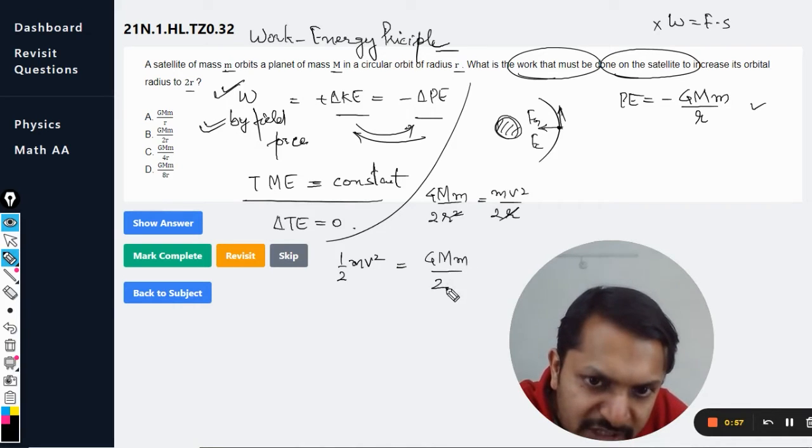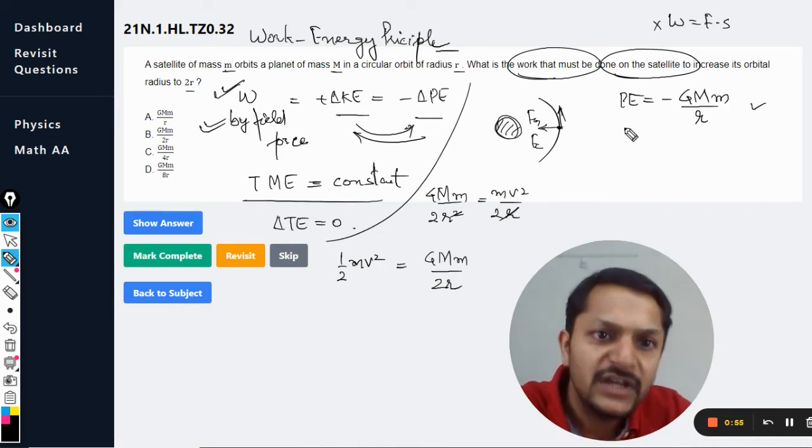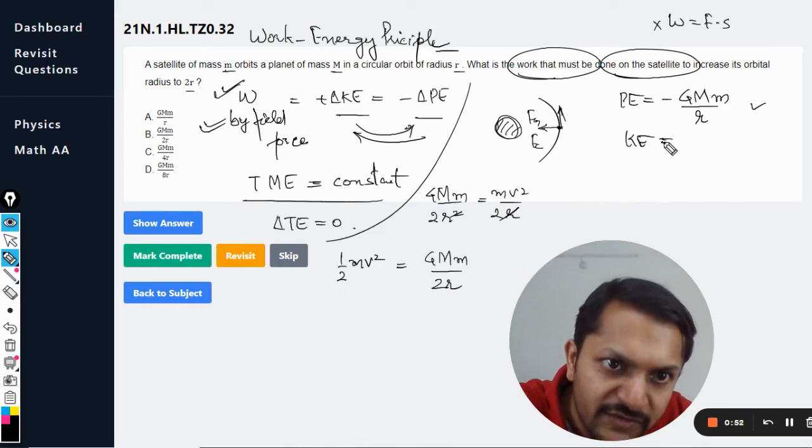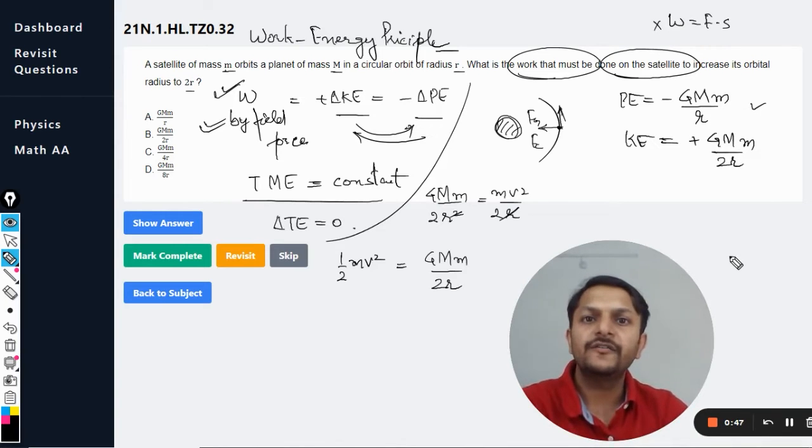Half mv squared is getting converted into this, which means the kinetic energy can now be given as positive GMm by 2r.